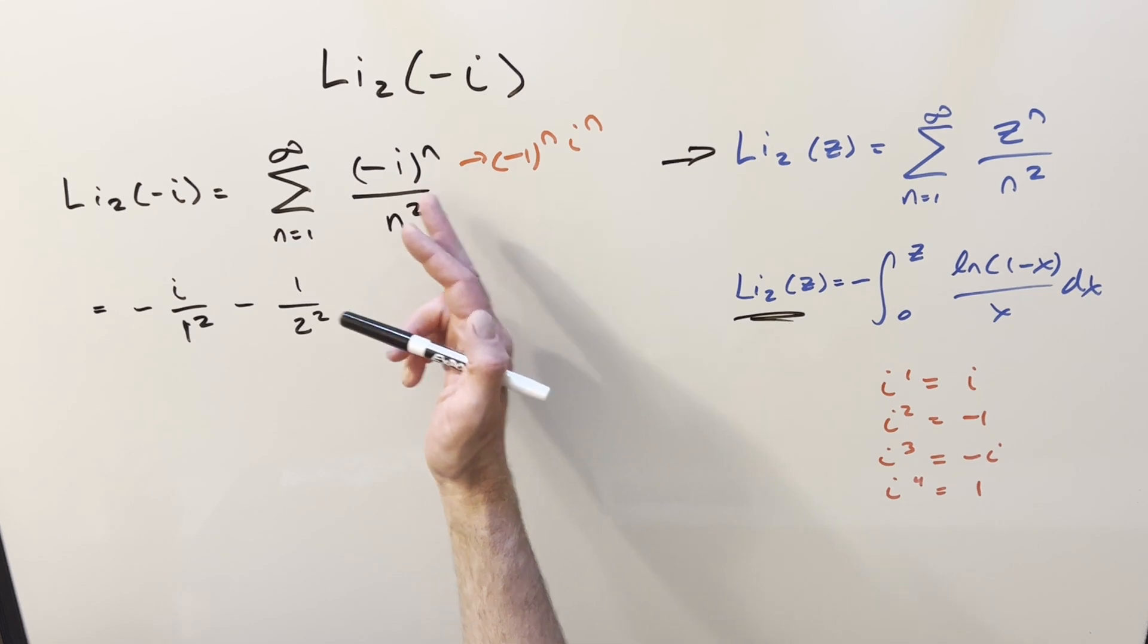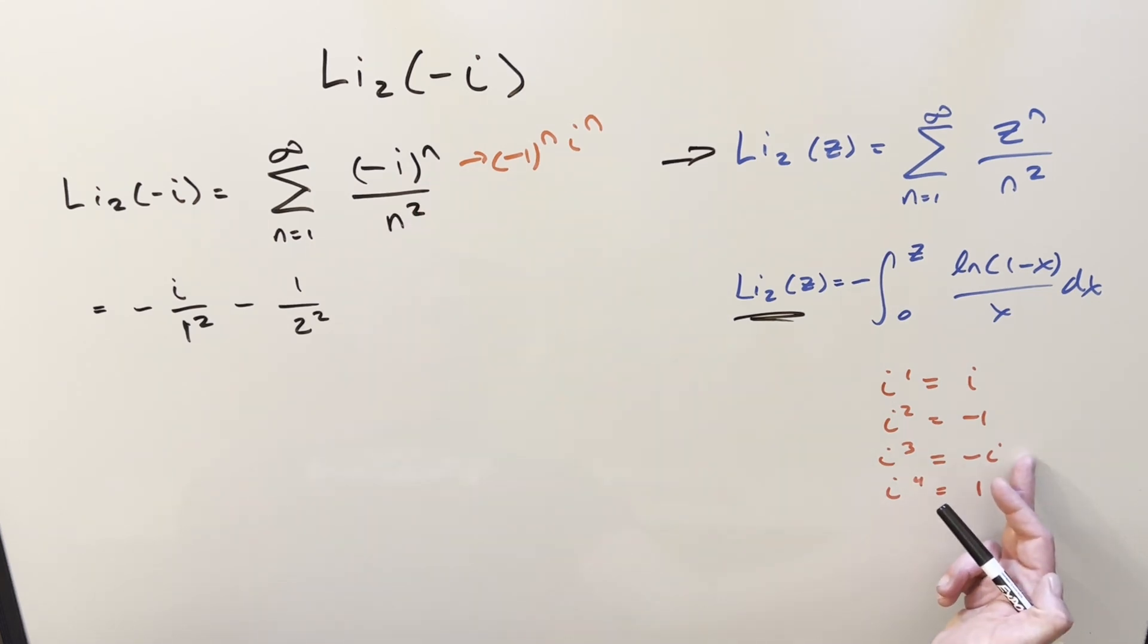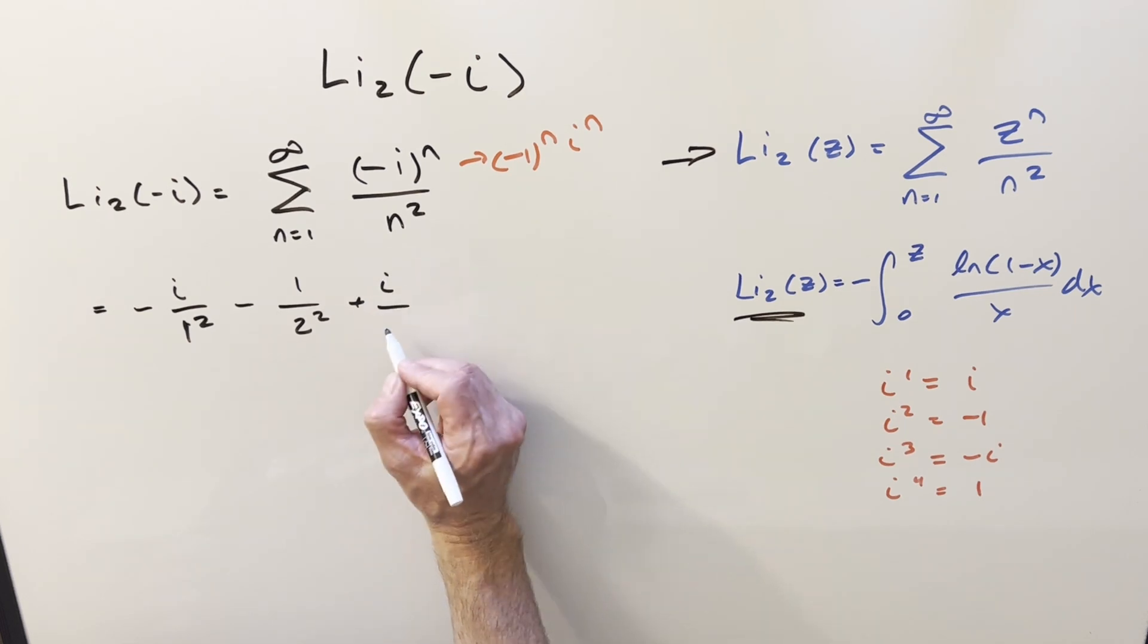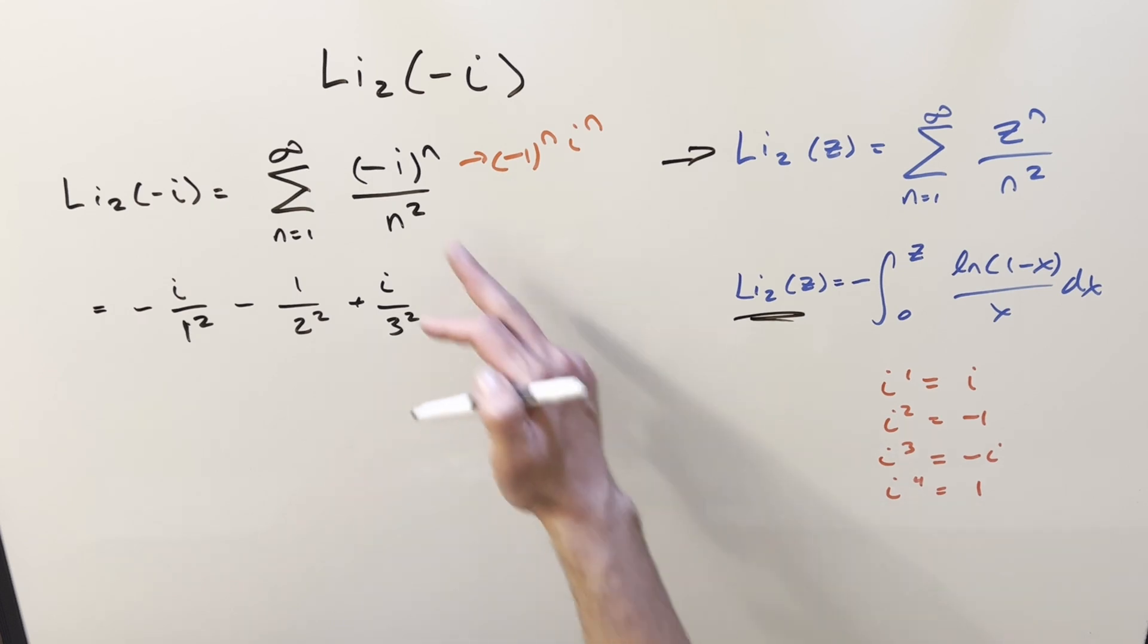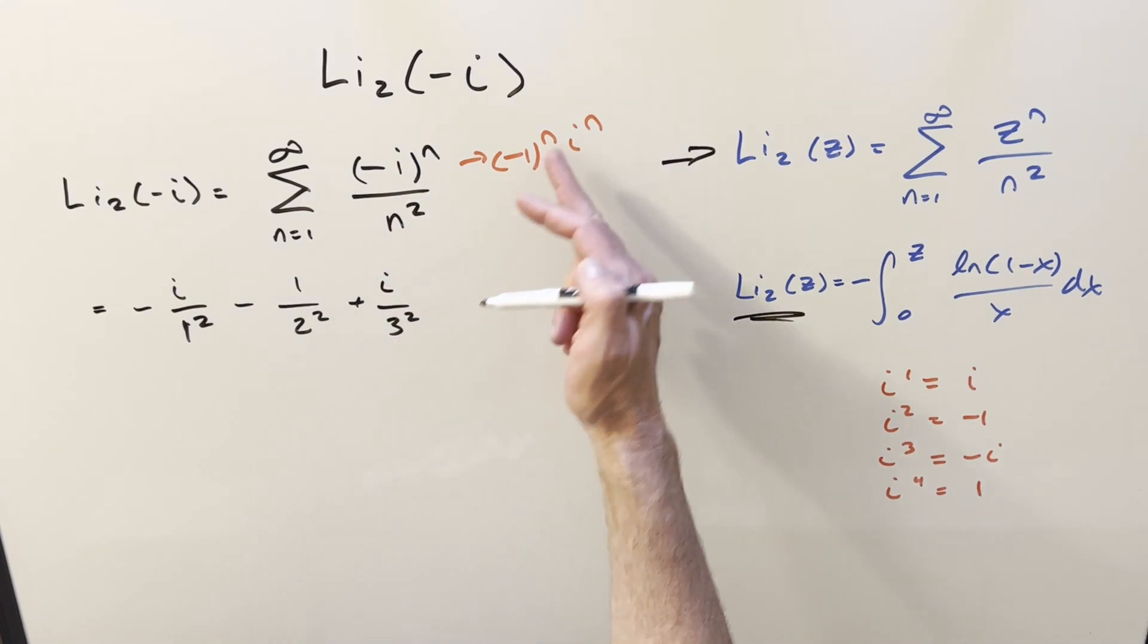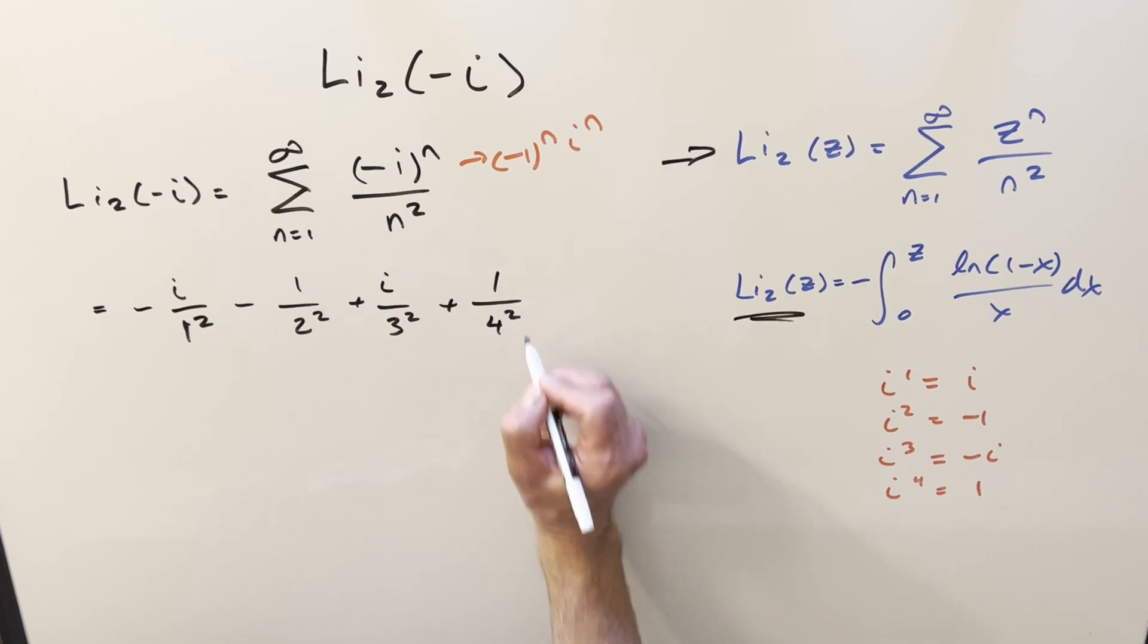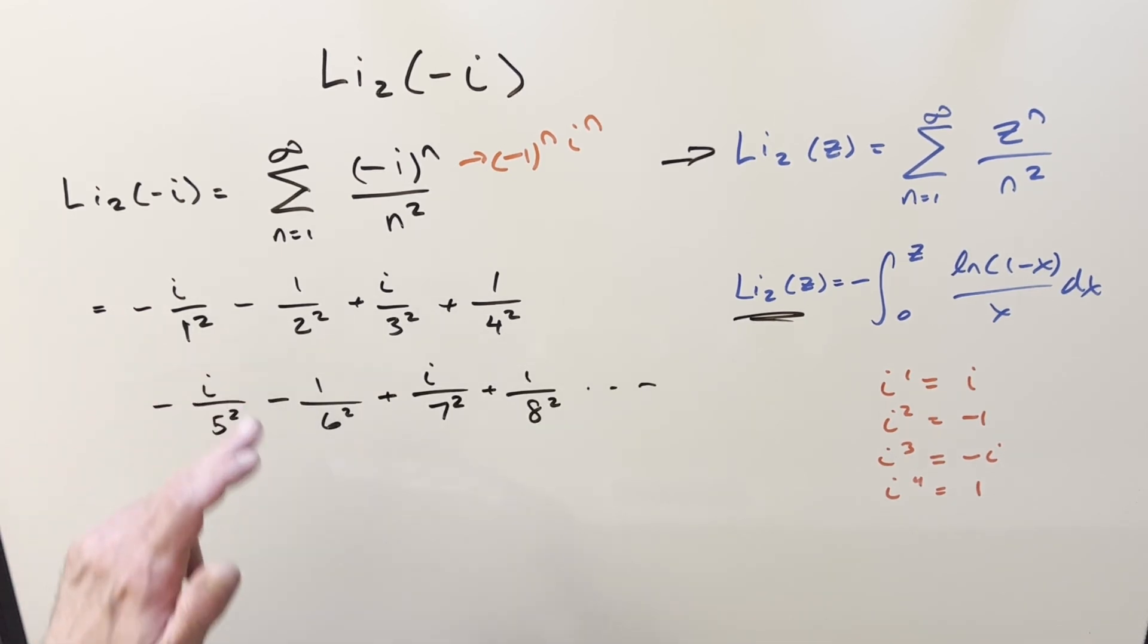So now for n equals 3, we have i cubed, which is minus i. And then we have a minus 1 in front. So this becomes positive i over 3 squared. And for n equals 4, i to the 4th is 1. The minus 1 to the 4th, an even power, becomes 1. So we end up with plus 1 over 4 squared. But from here, the pattern continues. We can look at one more set up to 8. Our denominators are counting up 1, 2, 3, 4 to infinity. And the numerators are just repeating with this pattern.